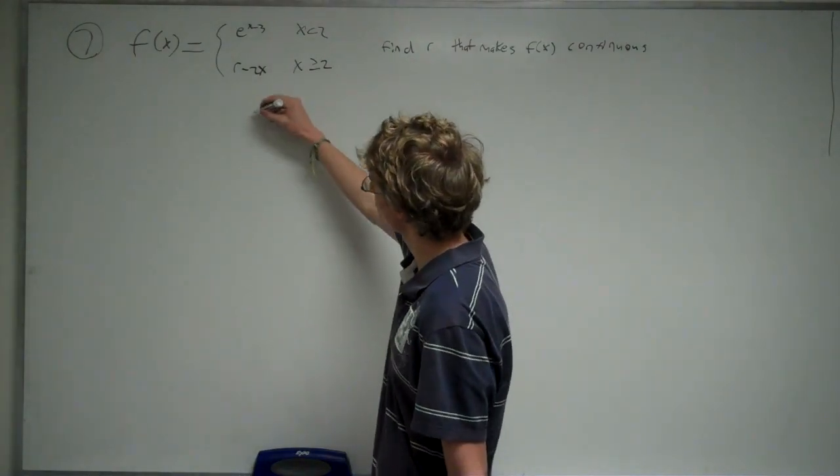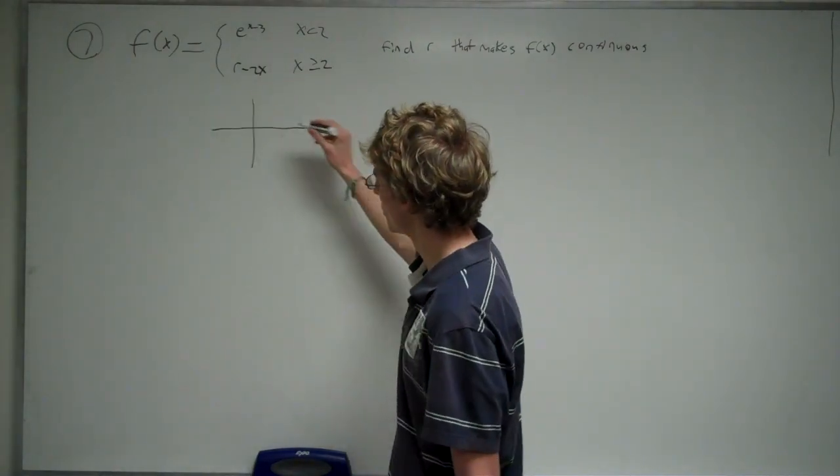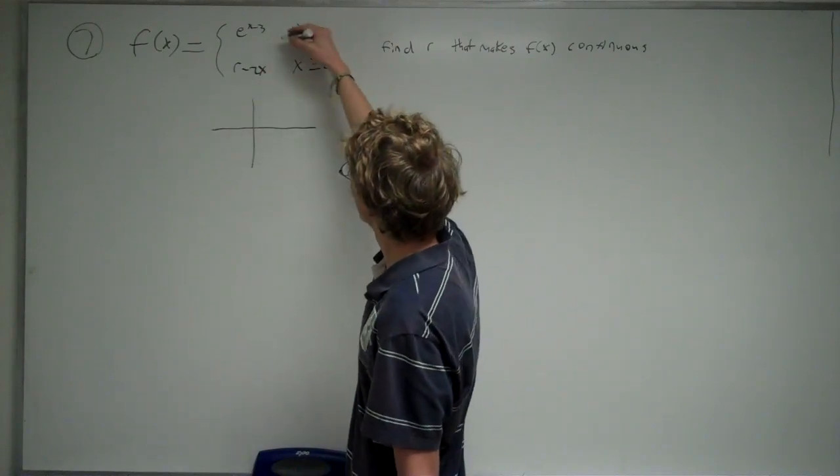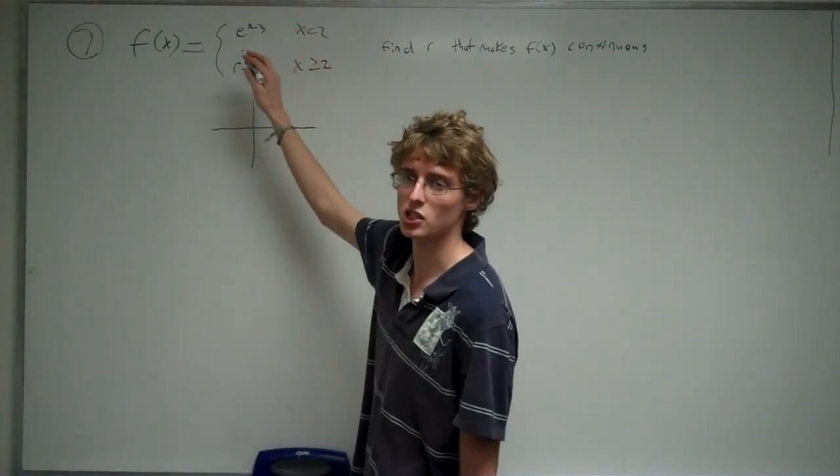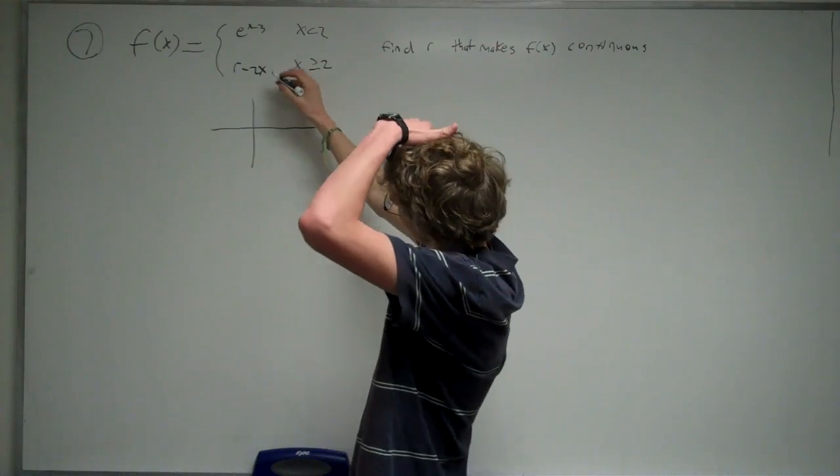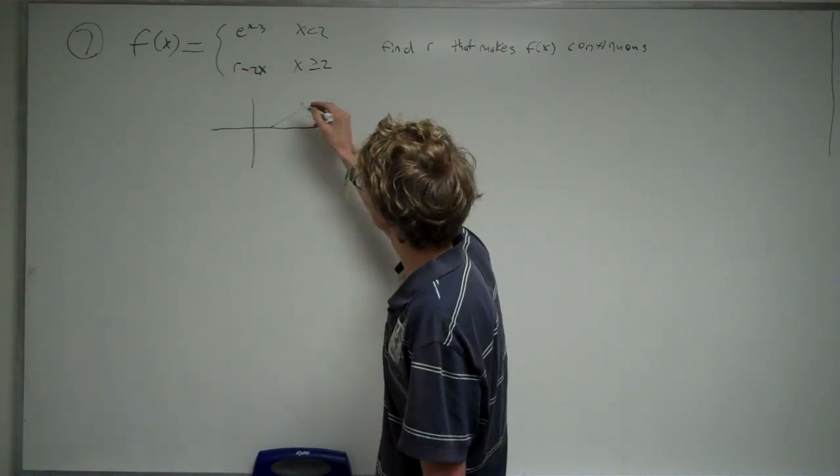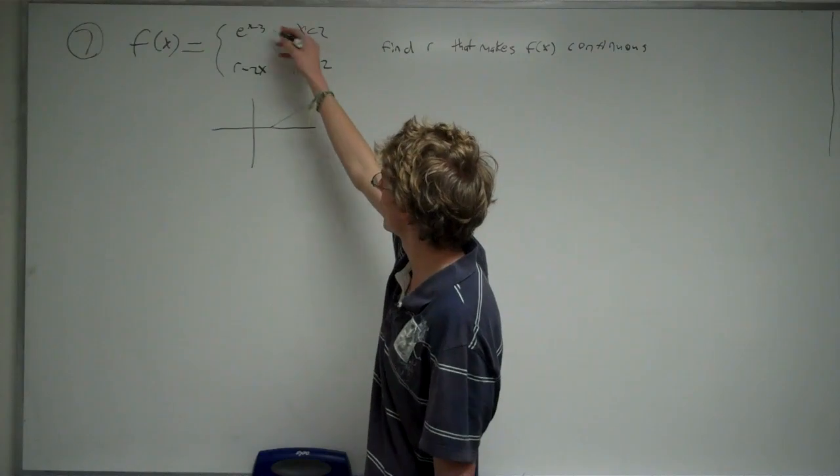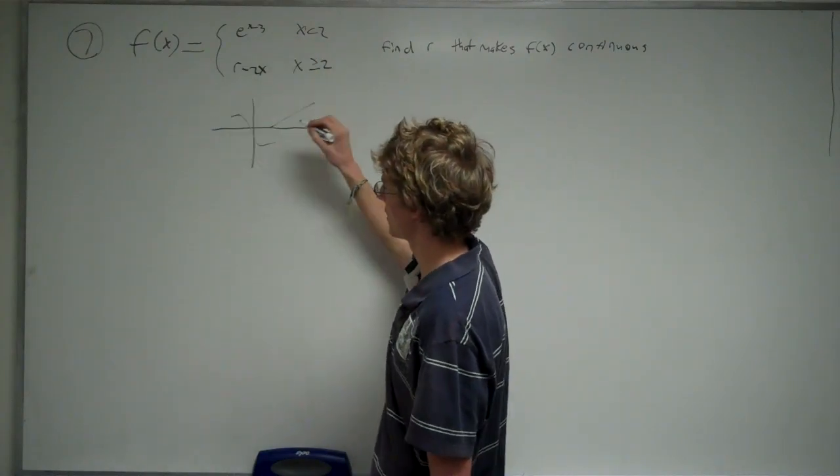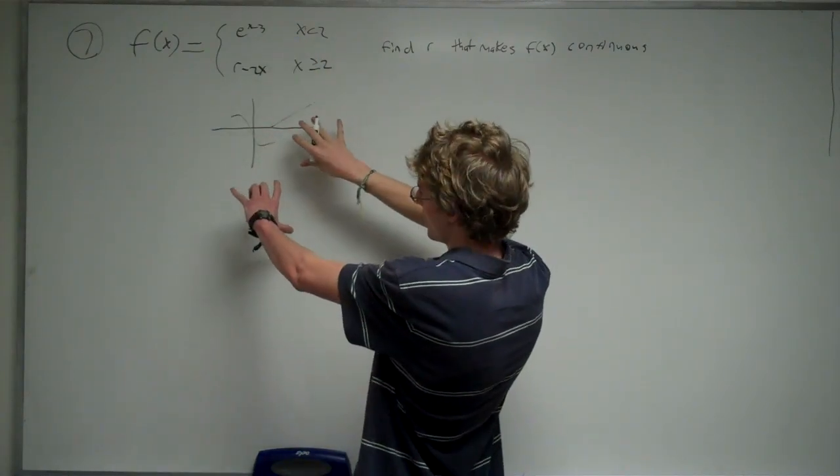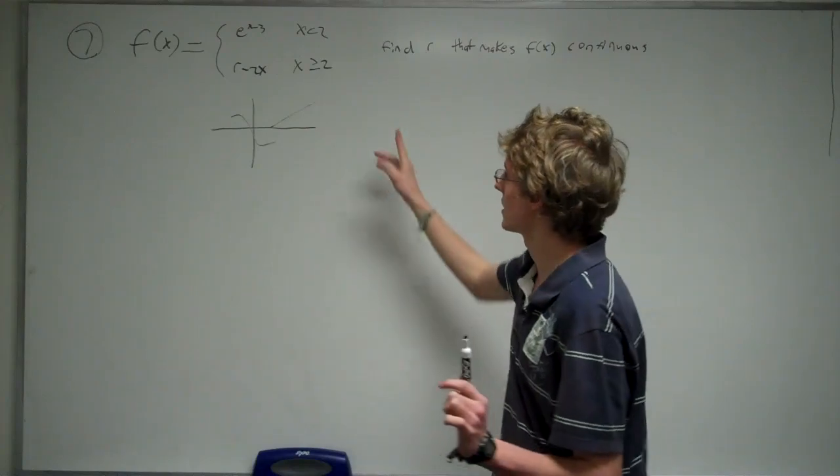Now, piecewise functions are broken up into two intervals, and on each interval you've got a different graph. So in this one, you've got a line when it's greater than two, and for this one you've got a graph of e to the x when it's greater than two, and they both look different, and you want to find a way to make them continuous.